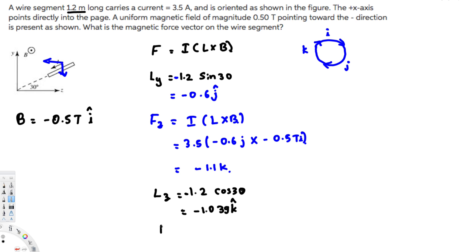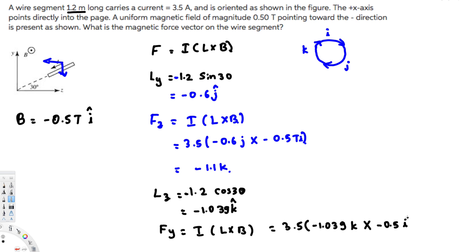F_y equals I times L cross B. Current is 3.5 amperes, L is negative 1.039 K, and B is negative 0.5 tesla in the i-direction. K cross I gives a positive J. With negative times negative giving positive, and the cross product also positive, the answer is positive 1.8 J.